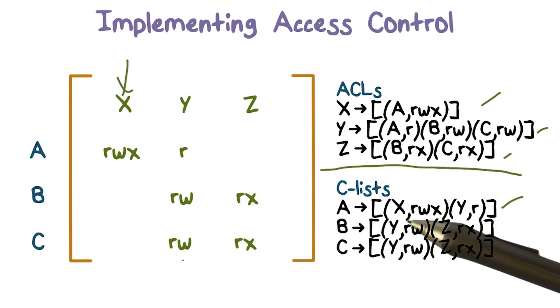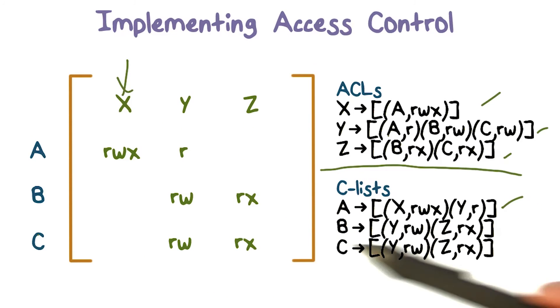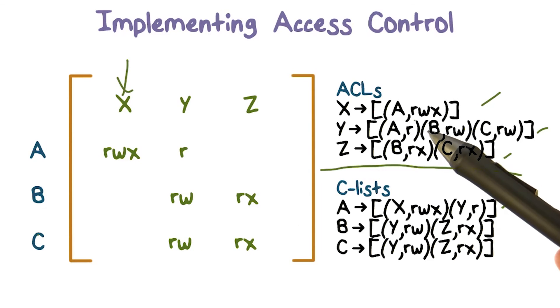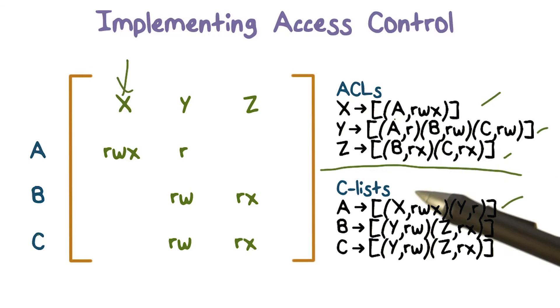ACLs, you go vertical per resource. C-lists, you go horizontal or row-wise per user. So we're talking about how you implement an access control matrix. One way is to define or have these lists. We'll talk about where these lists get stored or maintained, but the ACM information gets captured either in ACLs or in C-lists.